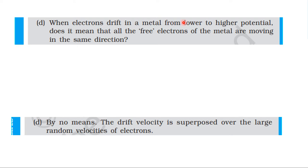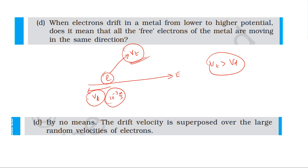When electrons drift in a metal from lower to higher potential, does it mean that all the free electrons of the metal are moving in the same direction? No. The electrons have thermal velocity, and when electric field is applied, they drift in the opposite direction with drift velocity. The drift velocity is in the order of 10 power minus 3 meters per second, while thermal velocity is in the order of 10 power 4 to 10 power 5 meters per second. The drift velocity is superposed over the large random velocities of electrons.